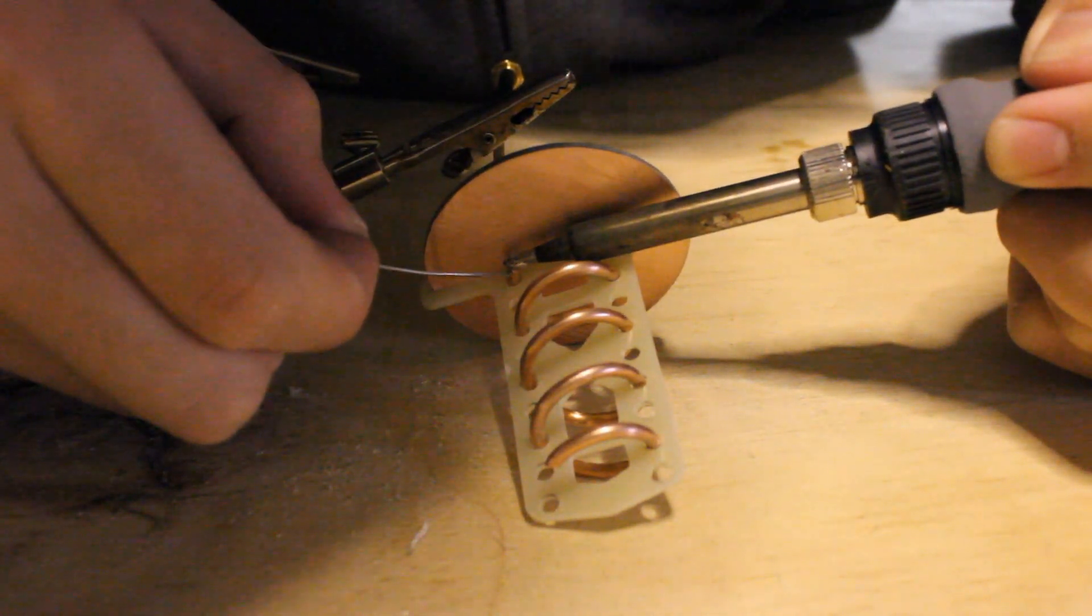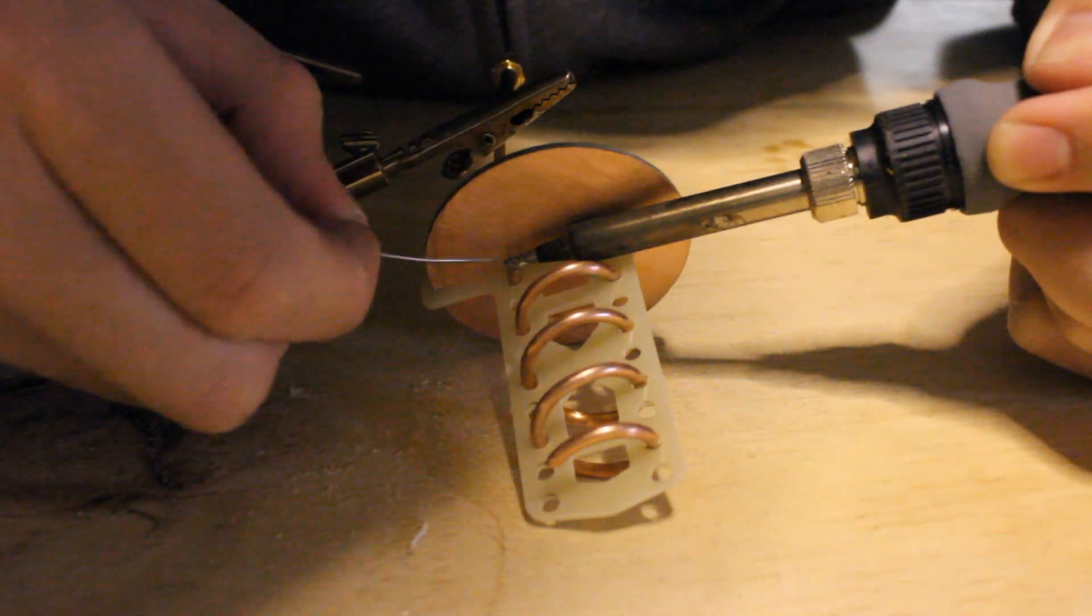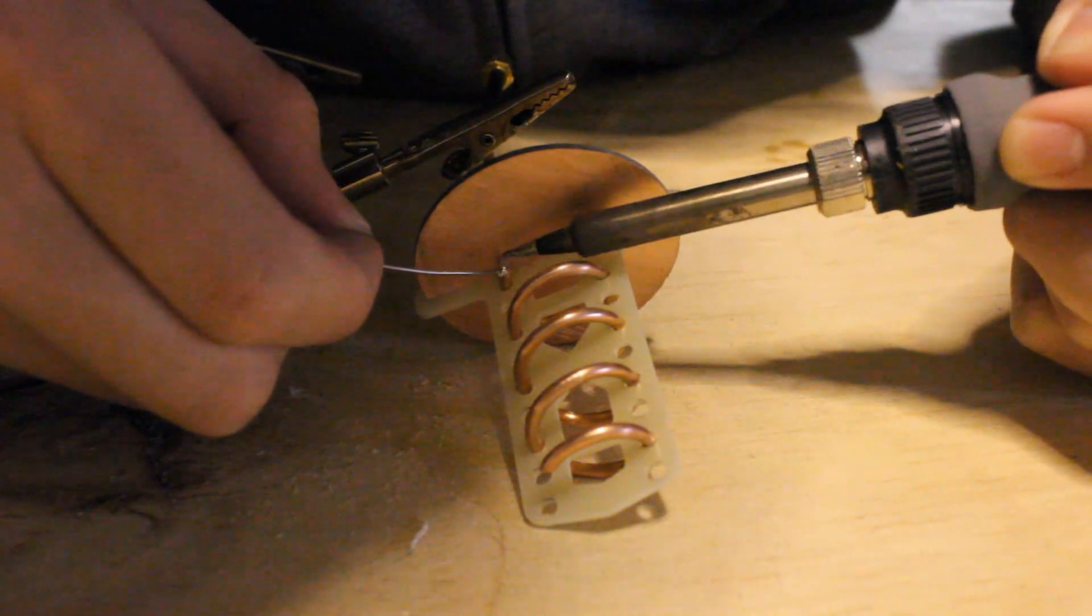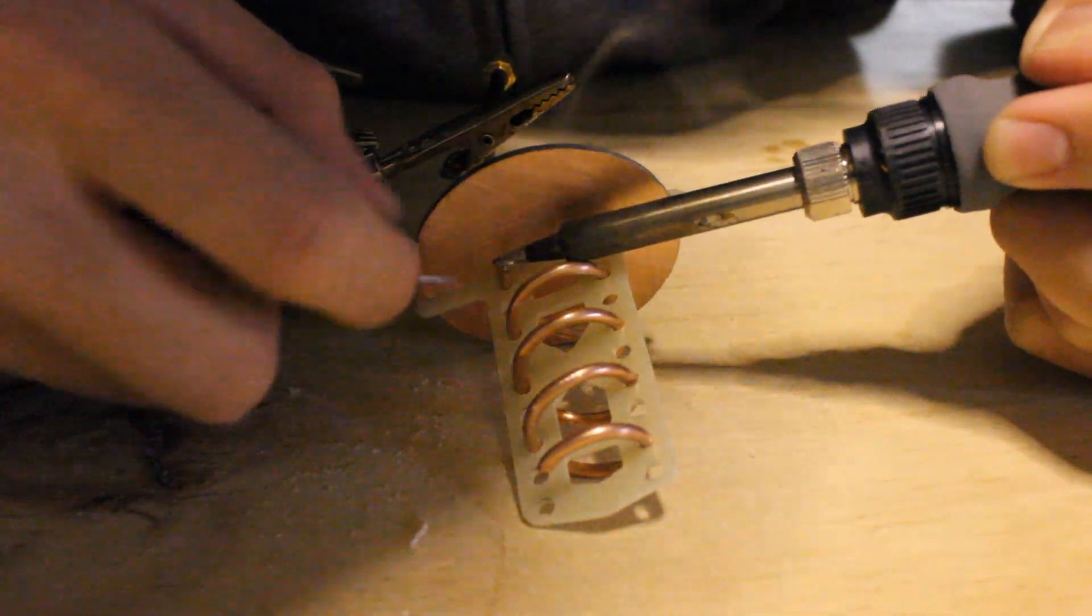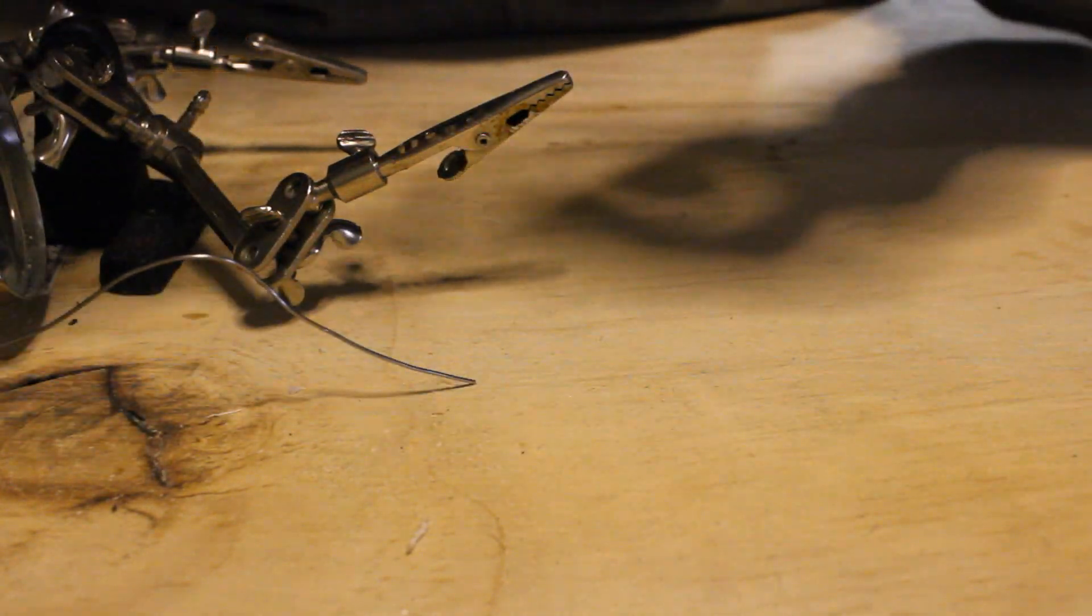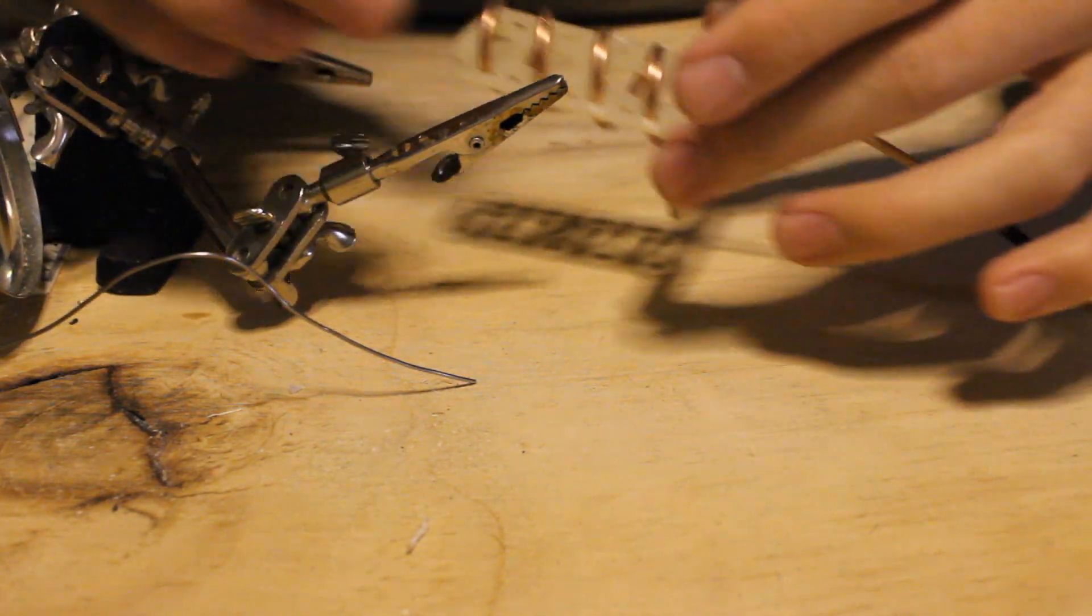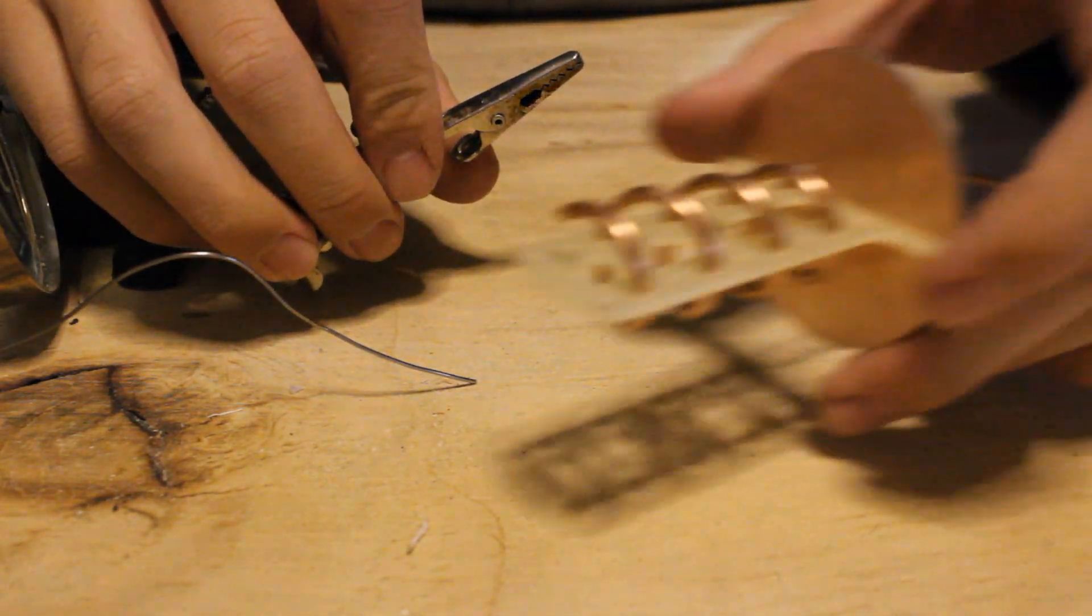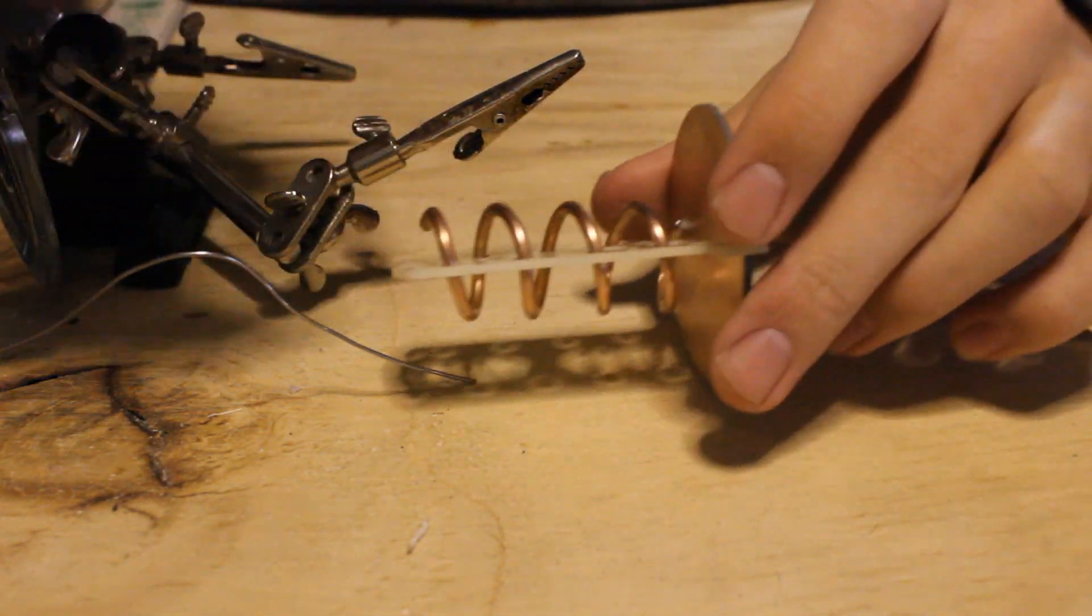So anyway, you literally just apply solder to the center conductor and the copper. I should have probably tinned these, but I think it will work. So go ahead and do this to your own antenna and we will meet back up.